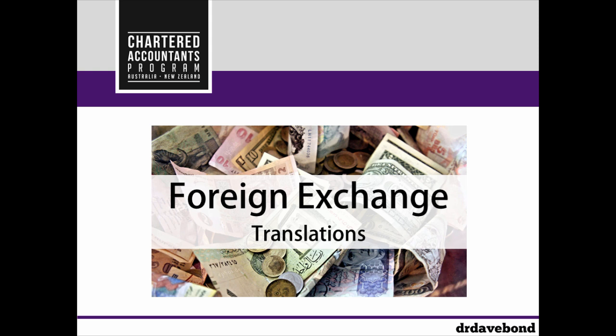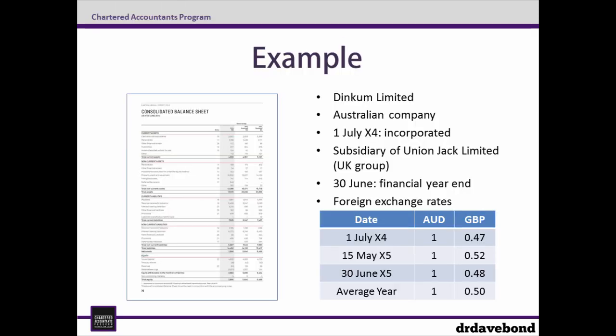Hi, my name is Dave and in this video we'll walk through an example of a foreign currency translation. In this example, Dinkum Limited is an Australian company which was incorporated on the 1st of July and is a subsidiary of Union Jack Limited, which is a UK group. Dinkum has a 30 June year end and we've got a number of exchange rates which are going to be useful as we move through the example.